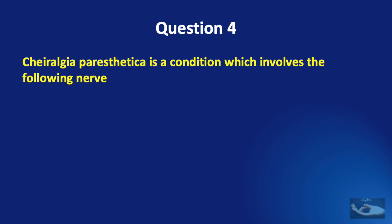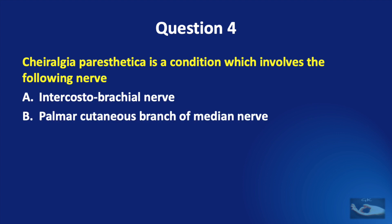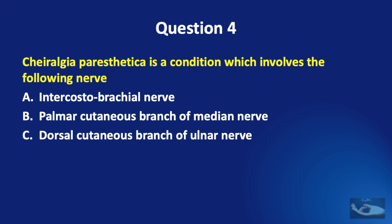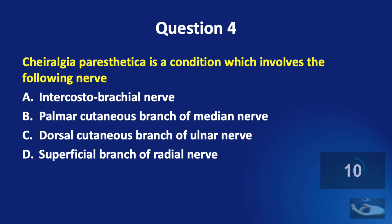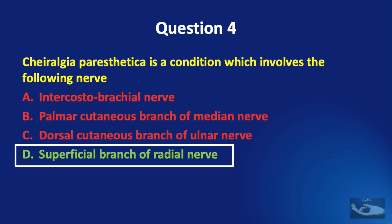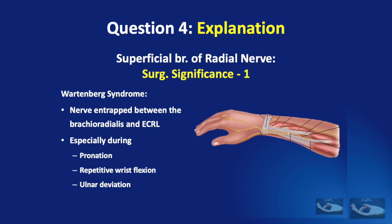Question number four: chiralgia parasthetica is a condition which involves which nerve — the intercostobrachial nerve, the palmar cutaneous branch of the median nerve, the dorsal cutaneous branch of the ulnar nerve, or the superficial branch of the radial nerve? The answer is the superficial branch of the radial nerve. This condition is otherwise known as Wartenberg syndrome, where this nerve is trapped between the tendons of brachioradialis and extensor carpi radialis longus in the distal forearm, causing pain along the dorsum of the hand, especially during pronation, repetitive wrist flexion, and ulnar deviation.